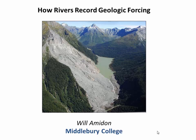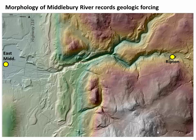Welcome to this video on how rivers record geologic forcing. In a previous video, we talked about how rivers are essentially living things, able to adjust their channel morphology in response to changes in their energy balance — for example, making their channels steeper or shallower, or wider or narrower. As they make these adjustments, they leave a topographic signature in the landscape. If we as geomorphologists and geologists can understand how to read that signature, we can understand what was forcing the river and use rivers to give us information about the geologic past.